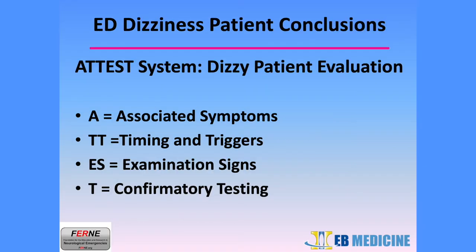This is a powerful list of statements that can be put into a dot phrase for every patient who presents with dizziness and acute vestibular syndrome. In conclusion, the ATTEST system for the evaluation of the dizzy patient includes: A — associated symptoms; T — timing and triggers; ES — examination signs; and T — confirmatory testing. A-TEST.